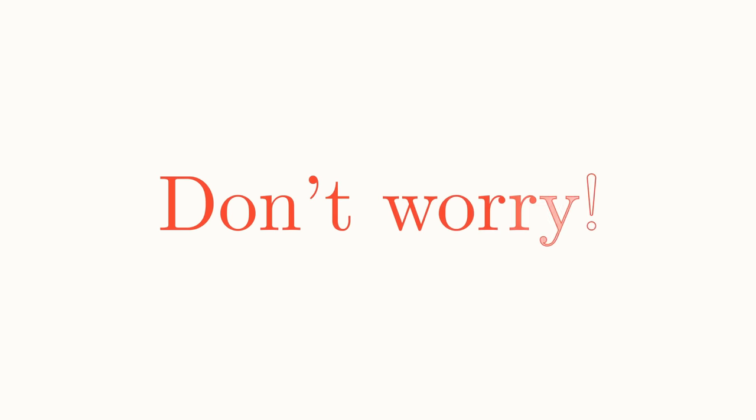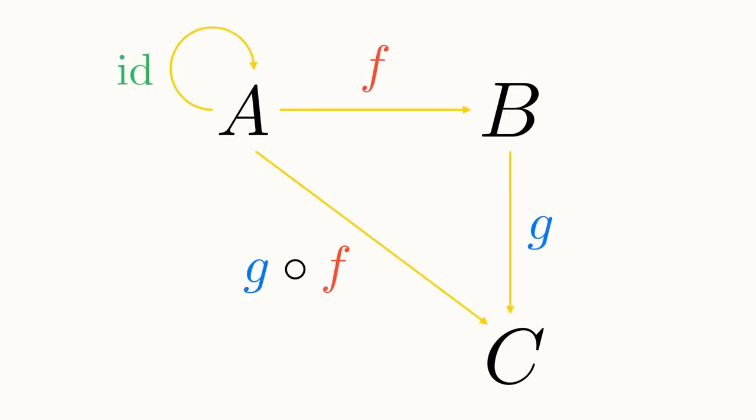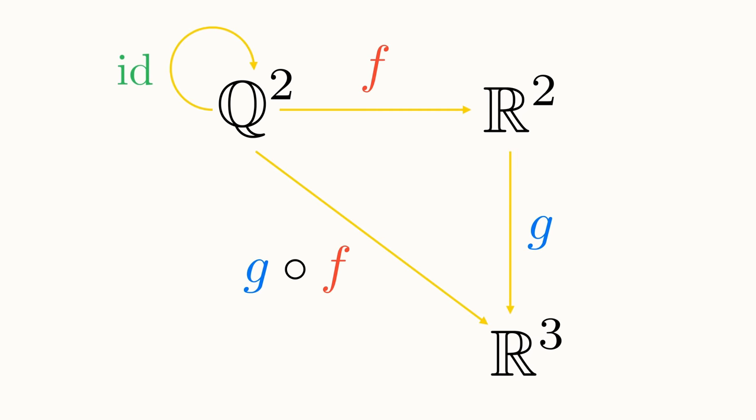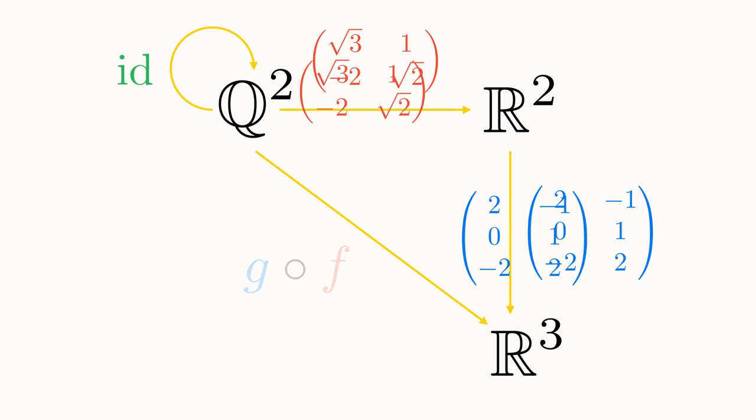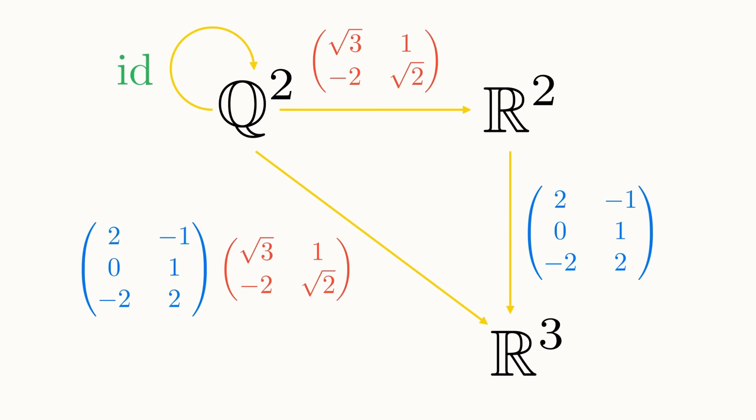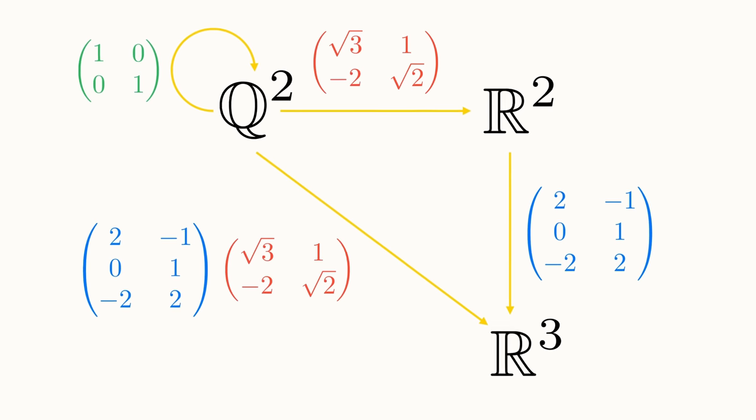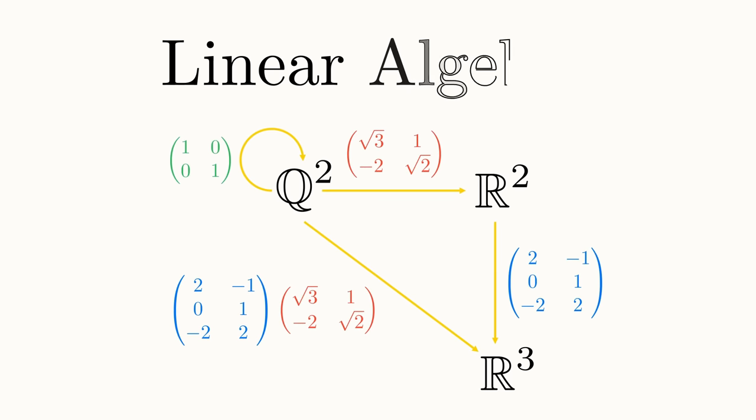Don't worry if you aren't familiar with these specific examples. My aim is to show the wide range of topics that have this same underlying structure. Firstly, by having our objects as vector spaces and arrows as matrices, with composition being matrix multiplication and the identity arrows being identity matrices, we define a category in the realm of linear algebra.